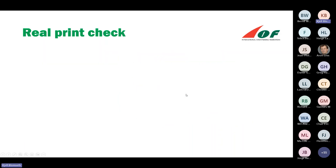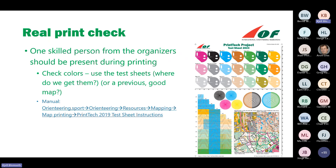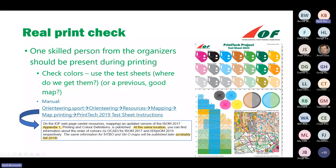When the maps are printed, I emphasize to the organizers that it's important to check the printing — even at printing offices used to printing orienteering maps. A skilled person should be present and check the colors of the map using a test sheet. That test sheet is presented through the web pages, though it's not written prominently where to get it. You should also check how rejected maps are treated, so competition maps don't end up in the garbage.